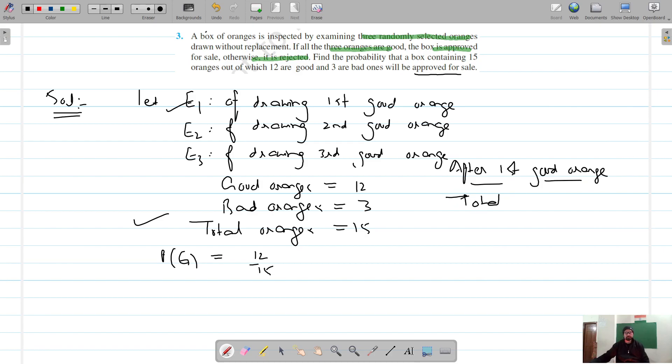Total oranges left are 14 and good ones are 11. So probability of second orange when first has happened is 11 by 14. After second good orange is drawn...